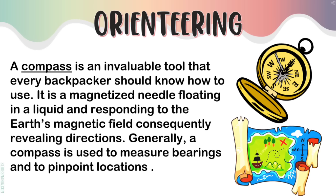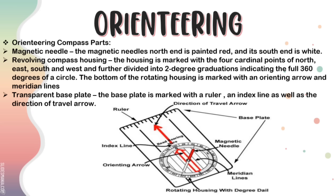Another thing you need in orienteering is a compass — an invaluable tool that every backpacker should know how to use. It is a magnetized needle floating in a liquid and responding to the Earth's magnetic field, consequently revealing directions. Generally, a compass is used to measure bearings and to pinpoint locations. Here are the parts of an orienteering compass. First, the magnetic needle — its north end is painted red and its south end is white. Second, the revolving compass housing — marked with the four cardinal points of north, east, south, and west, and further divided into two-degree graduations indicating the full 360 degrees of a circle. The bottom of the rotating housing is marked with an orienting arrow and meridian lines. Third, the transparent base plate — marked with a ruler, an index line, and the direction of travel arrow.